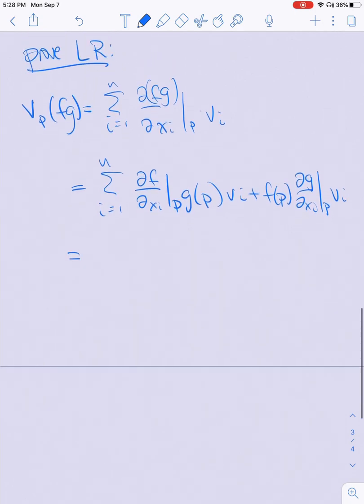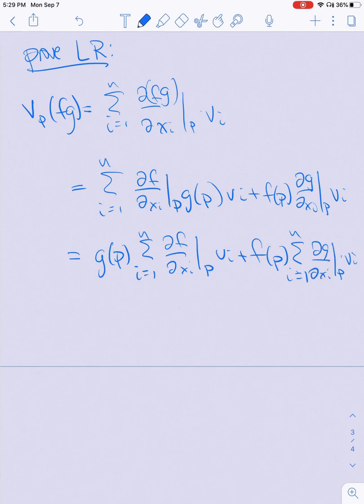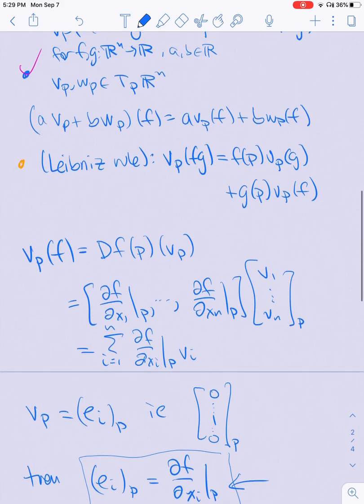I can reorganize this to pull out all the g(p) terms: sum from i=1 to n of df/dx_i at p times v_i plus f at p times the sum from i=1 to n of dg/dx_i at p times v_i. This is just equal to g at p times v_p of f plus f at p times v_p of g, which is what I wanted to show.